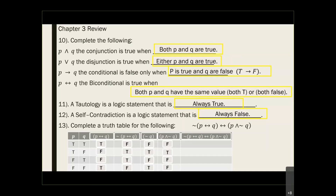To finish it off, we do the final biconditional statement — we compare this column versus that column. As long as they have the same value the result is true, and the only time it's false is when they have opposite values. We work inside the parentheses and expand outward.